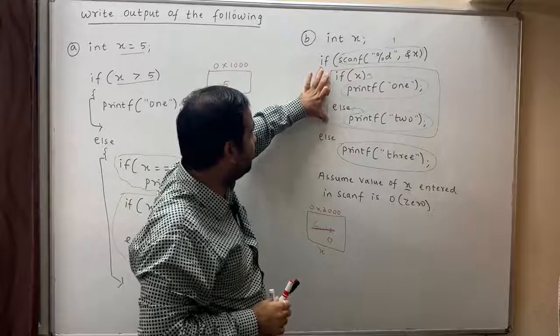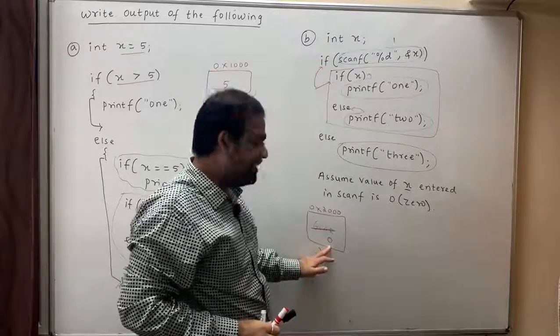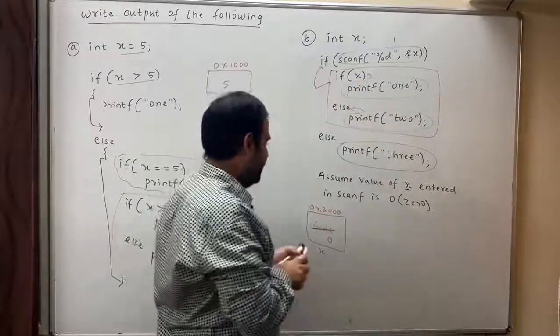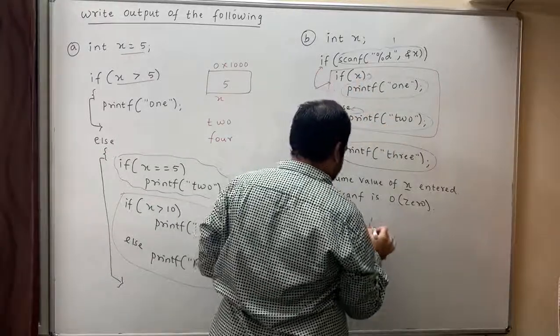One is true. That means this body of if should be executed. That means this if-else should be executed. What is the value of x? It is zero. Zero is false. Therefore else should be executed and the output of this question is two.